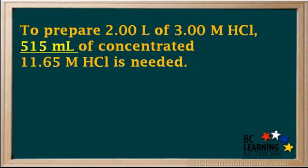So to prepare 2 liters of 3 M HCl, 515 milliliters of the concentrated 11.65 M HCl is needed.